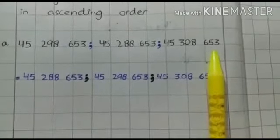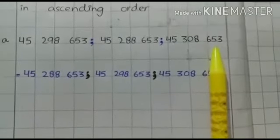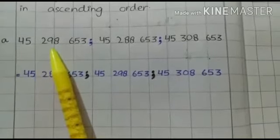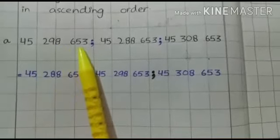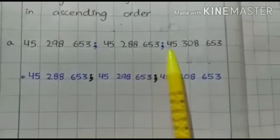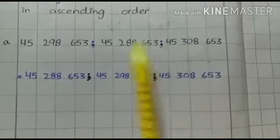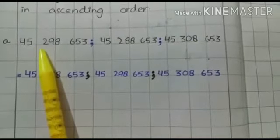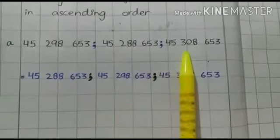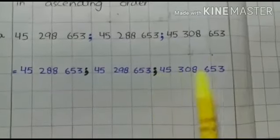So students, now we compare the digits from left side one by one so that we can easily understand which value is smallest, which we will write first. So 45,298,653; 45,288,653; 45,308,653. At hundred thousands place what is mentioned? 2. In second value what is mentioned? 2. And here what is mentioned? 3.